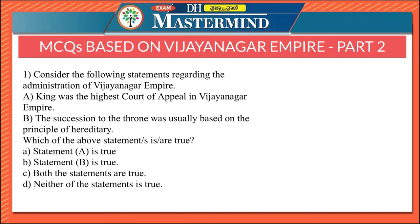Welcome to Mastermind. Today let us learn more about the Vijayanagara Empire by solving multiple choice questions. The first question considers the following statements regarding the administration of Vijayanagara Empire: Statement A says the King was the highest court of appeal, while Statement B says succession to the throne was usually based on the principle of hereditary. Both the statements are true, so the correct option is Option C.